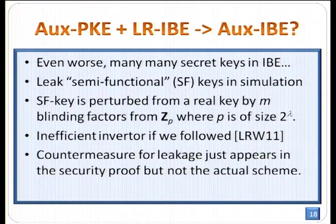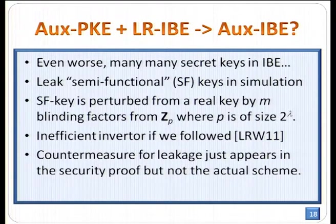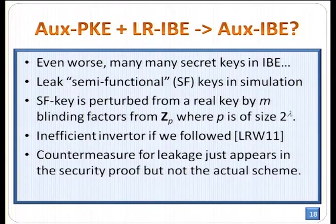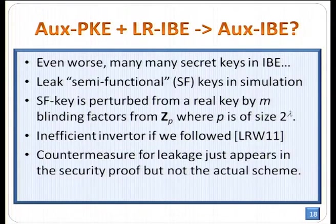We try to combine leakage-resilient IBE with the auxiliary-input-secure PKE. This is not straightforward because in the leakage-resilient IBE, we leak semi-functional keys in the simulation. A semi-functional key is produced from a real key by multiplying factors from a set P of size 2^λ. Since P is quite large, by the unmodified GL theorem the inverter is inefficient, so we cannot give a correct security proof. In our paper, we give countermeasures for these problems; note these countermeasures only appear in the security proof, not in the real scheme.